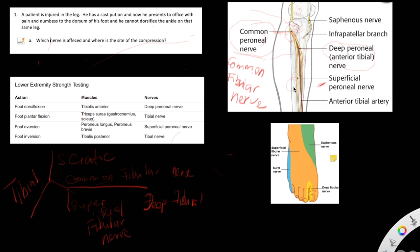It's called the superficial fibular nerve because it travels along the fibula, and it's a branch of the common fibular nerve. The common fibular nerve wraps laterally around the head of the fibula. It's very superficial and can be injured easily due to trauma to the lateral side, or if the cast is put on too tightly. The common fibular nerve also gives a branch called the deep fibular nerve.